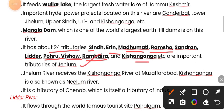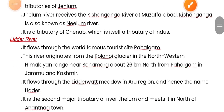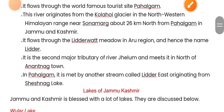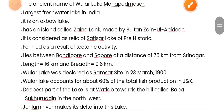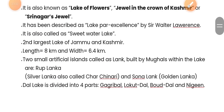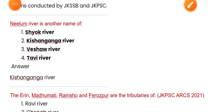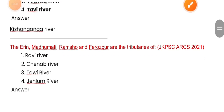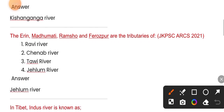Pahalgam is a world-famous tourist site located on the Lidder river, a tributary of Jhelum. Other tributaries include Erin, Madhumati, Ramso, and Firozpur.